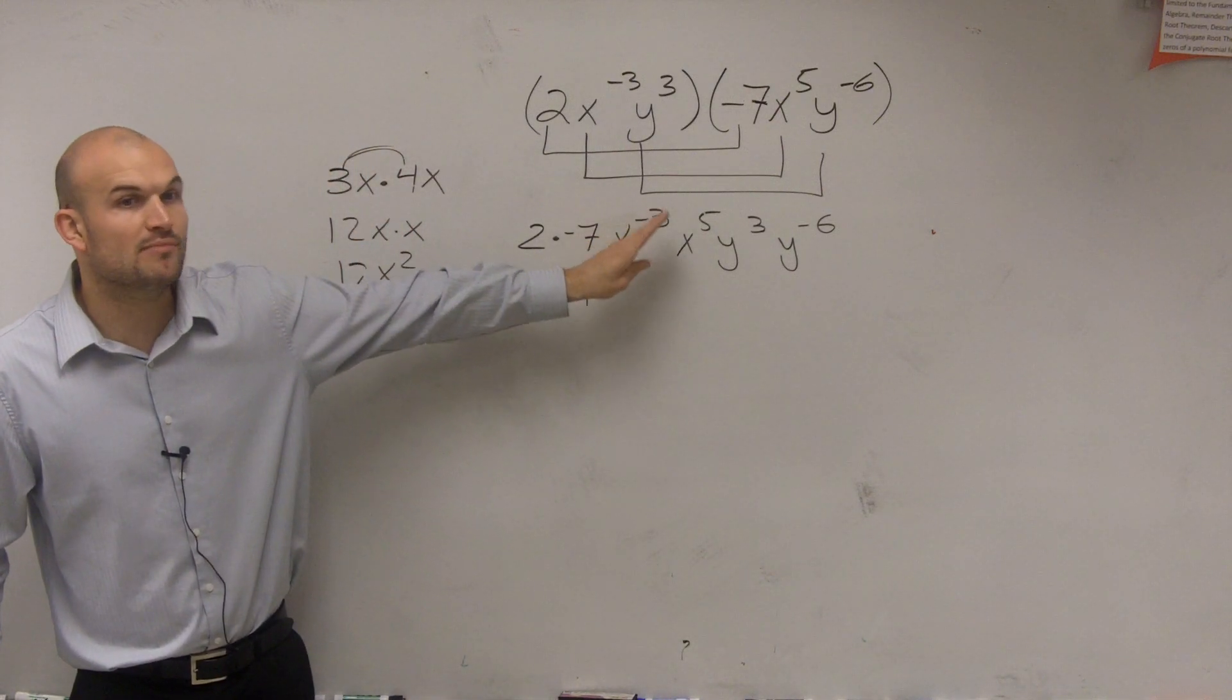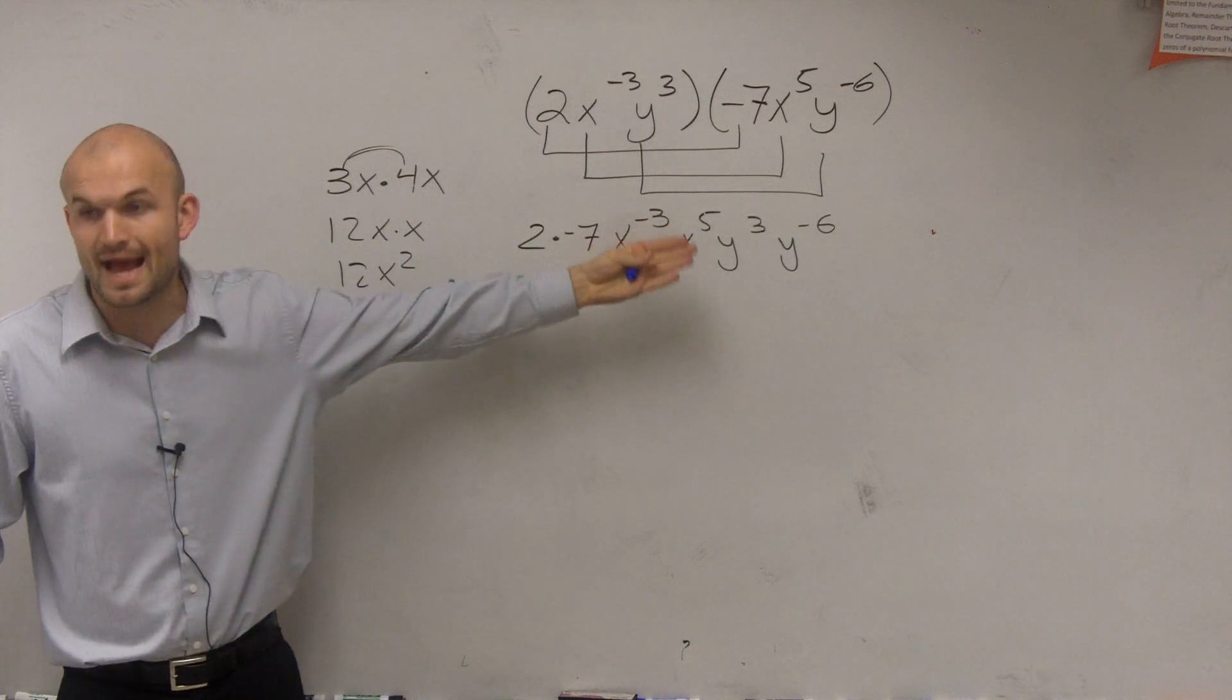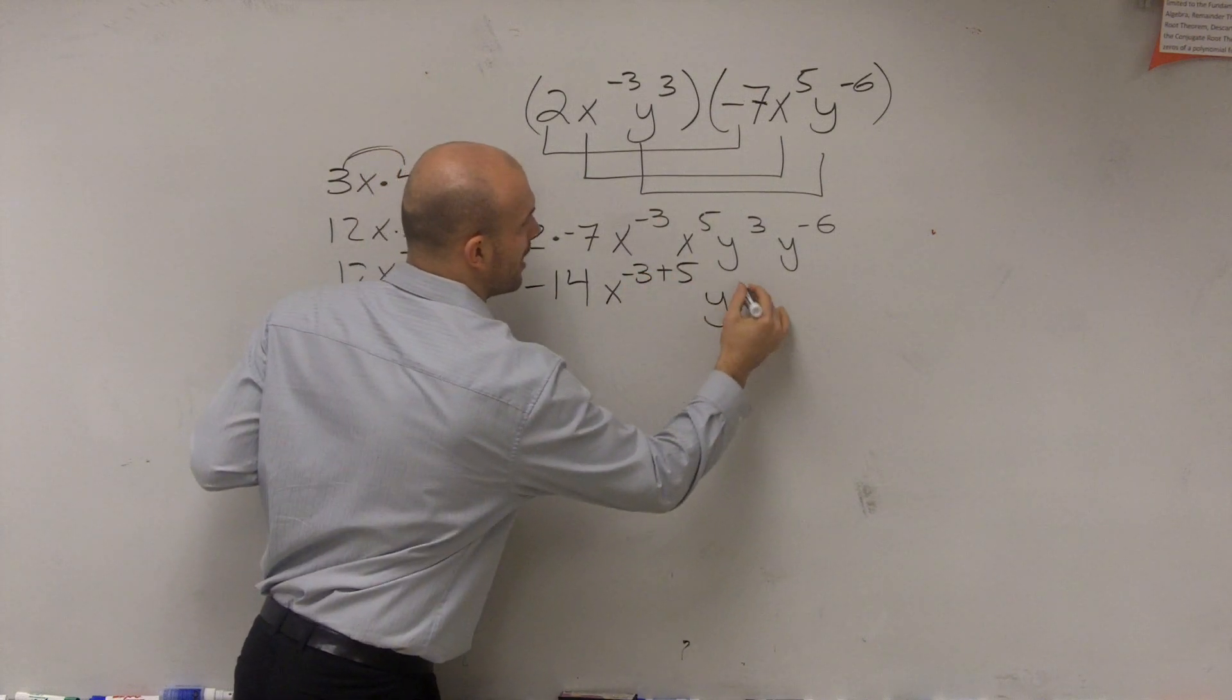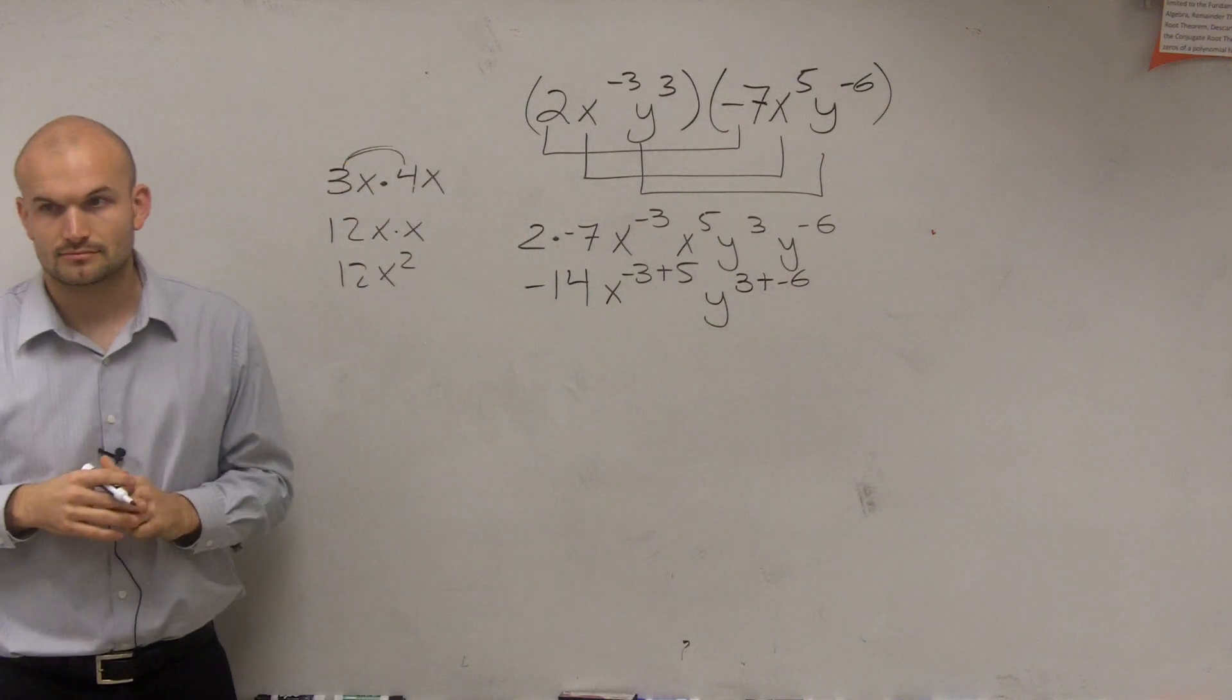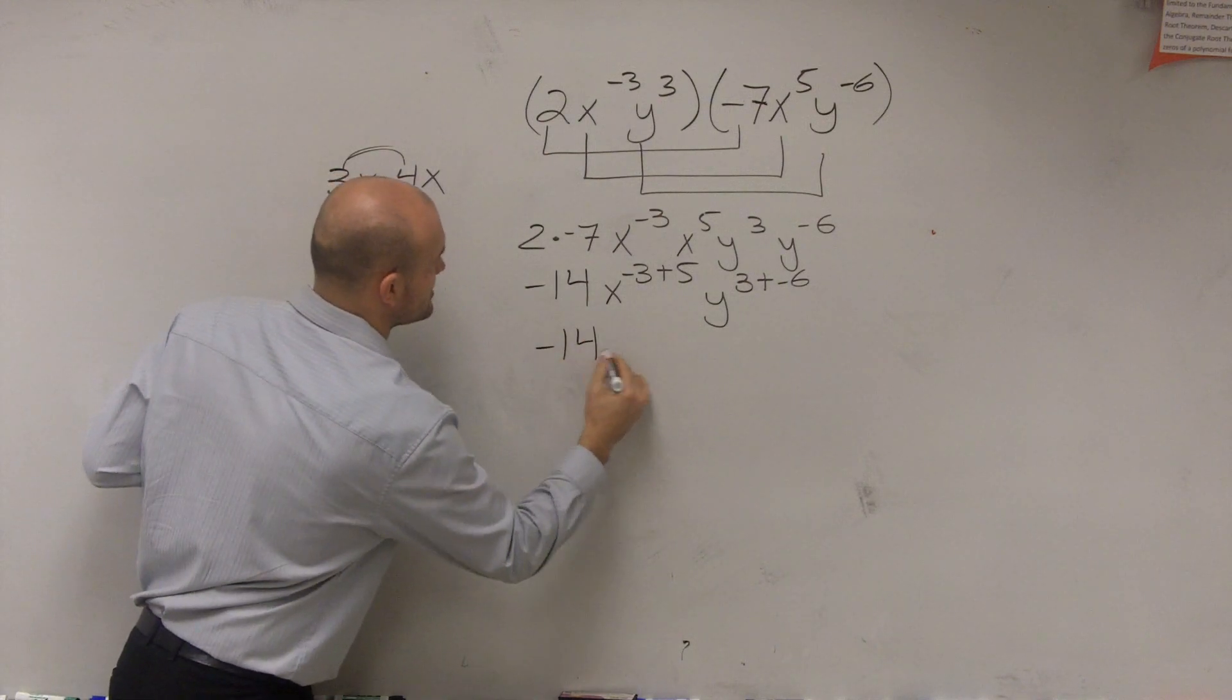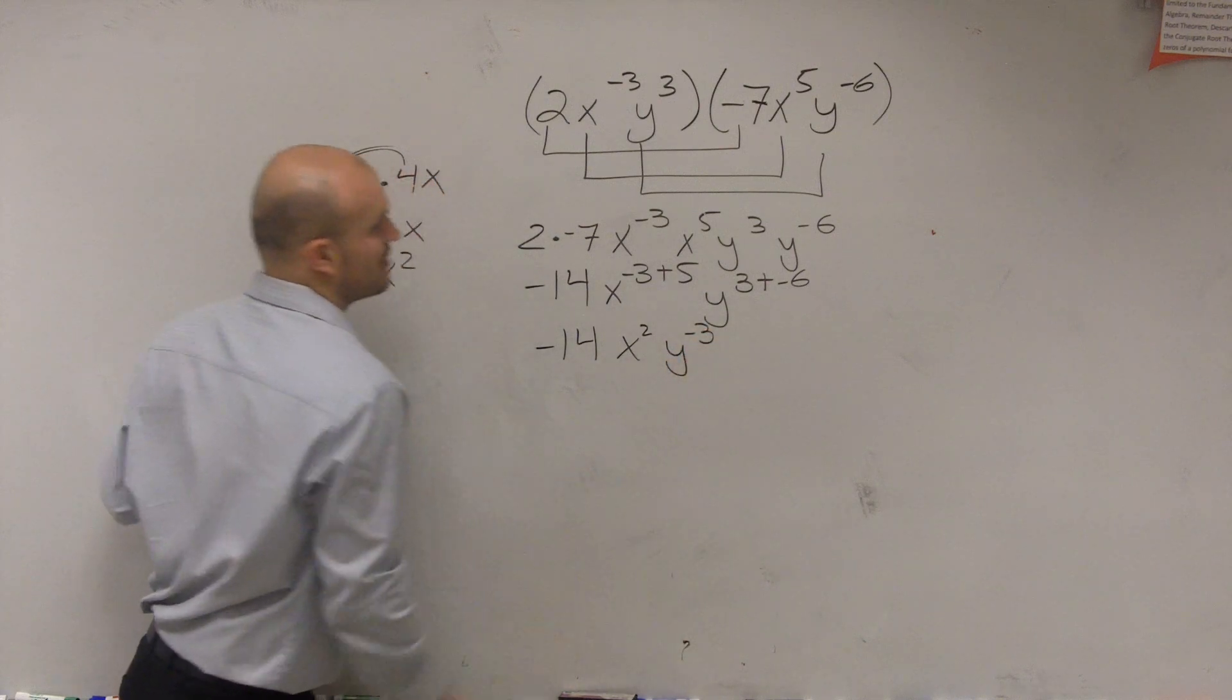Now remember, when we multiply our exponents, we're going to add our powers. So this becomes x to the negative 3 plus 5, and this becomes y to the 3 plus negative 6. Right? By our rules. We're just using those rules. So therefore, I have negative 14, x squared, y to the negative 3rd power.